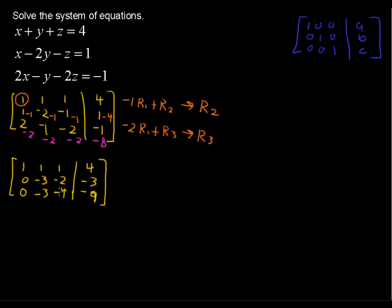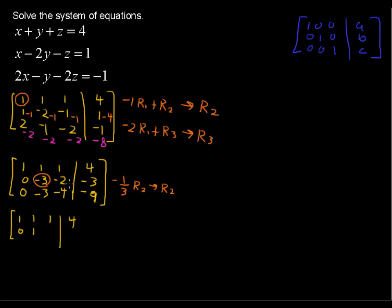We've got that matrix going the way we want it. Now we need the middle number to equal 1. If we multiply by the reciprocal, we'll get a 1 there. So negative 1 third times row 2 will replace row 2. Row 1 is not affected: 1, 1, 1, 4. For row 2: 0, 1, negative 2 times negative 1 third is positive 2 thirds, and negative 3 times negative 1 third is positive 1.